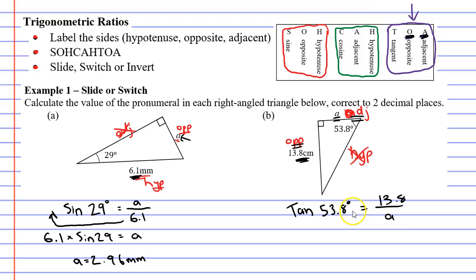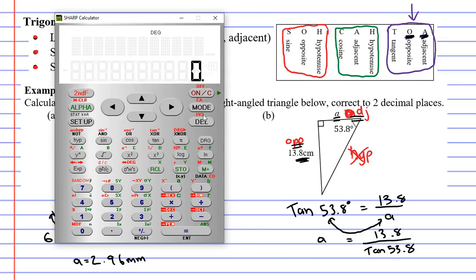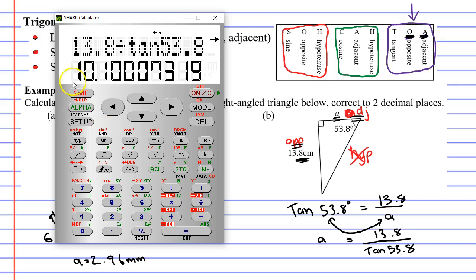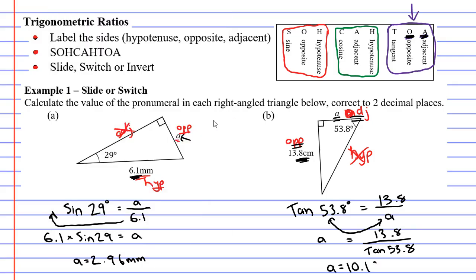Now, when you look at this example here, you'll notice that the letter A is at the bottom of the fraction this time. Not the number. The number is at the top. Now, if the number was at the bottom, we would have done a slide. But it's not. So we need to do what's called a switch. We're going to switch or swap the A with TAN 53.8. That means that the A is going to come on the left of the equals sign. And the TAN 53.8 is going to go at the bottom of the fraction. So we've switched them. We've swapped them over. Once again, we just bring up our calculator. Got to clear it. 13.8. And I just do divide because fractions are the same as divide. Divided by TAN of 53.8 equals. And to two decimal places, I would get 10.10. And this will be in centimetres.